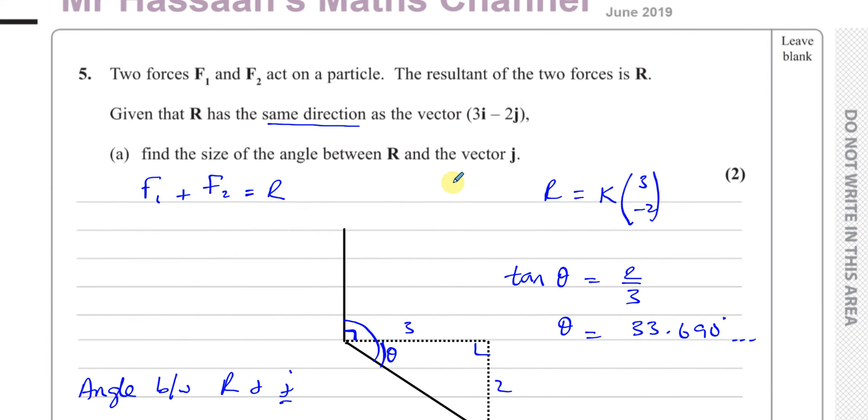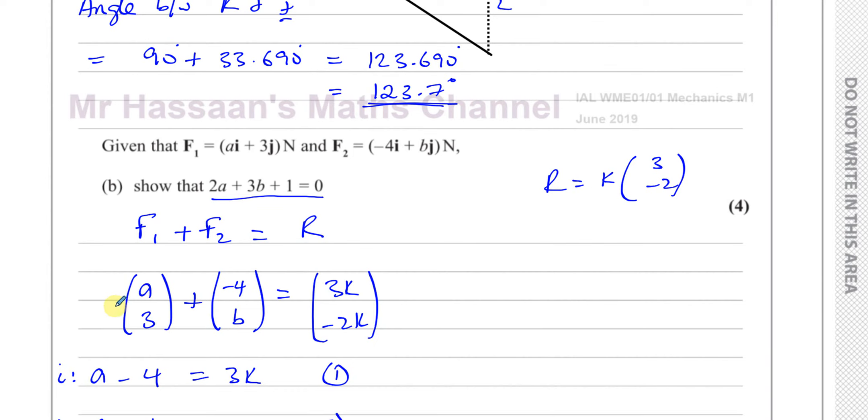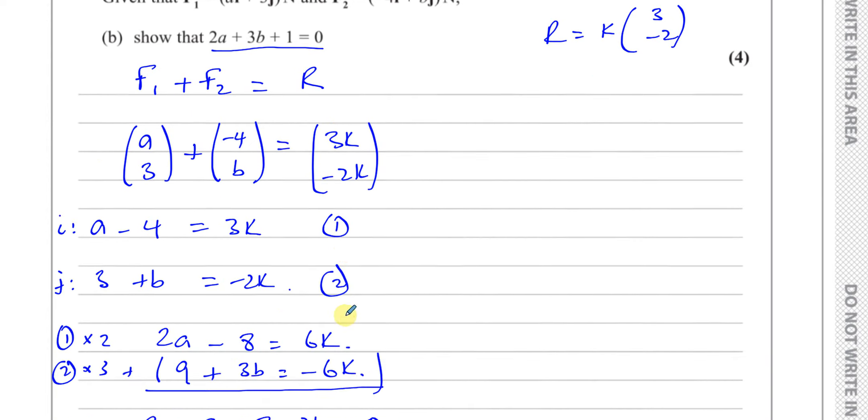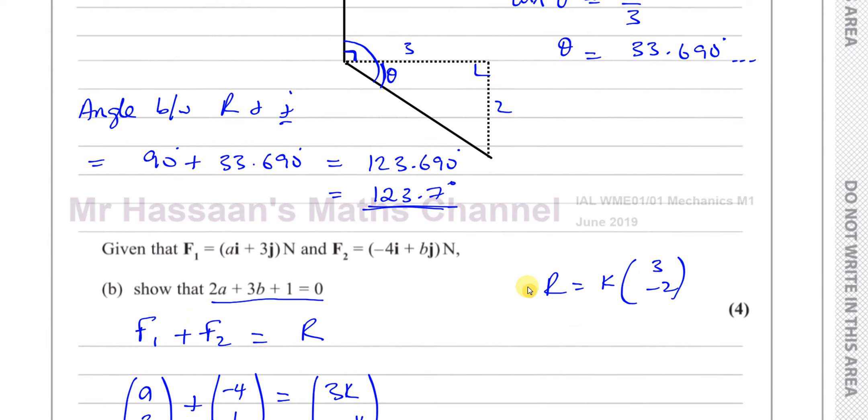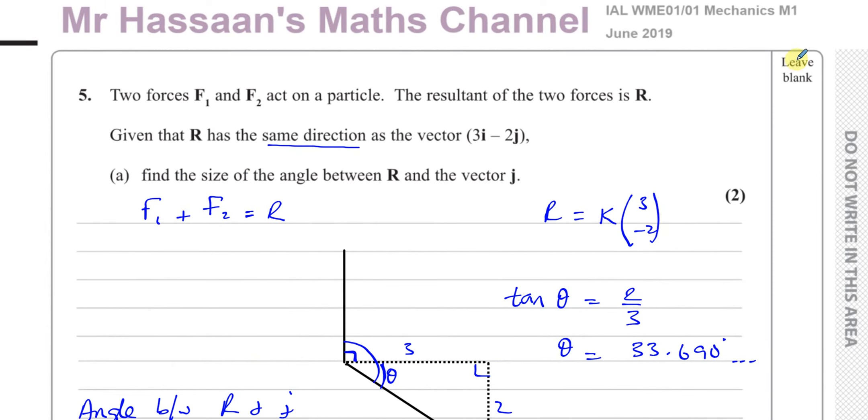So basically, for part A, we have to use the directions of j and R to find the angle between them. For part B, we use the fact that the resultant vector is a sum of the two vectors F1 and F2, and the resultant vector is some multiple of 3 minus 2 because it's parallel to it. So we can set up a pair of equations, compare the i and j components, and we get our final answer. Other questions from this paper will be in the playlist that should appear in this link. Other questions from this topic of vectors in M1 can be found in the playlist over here. You can subscribe to my channel by clicking the link, and in the description you'll find links to other material for A-Level and IGCSE. Thank you for watching and see you soon.